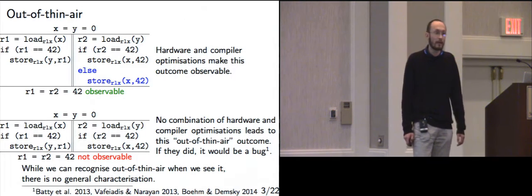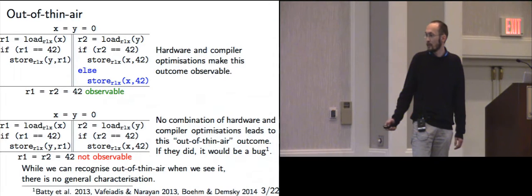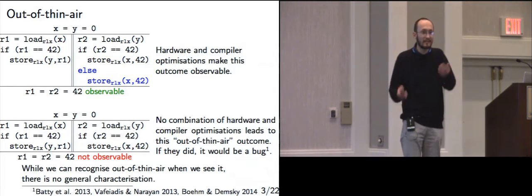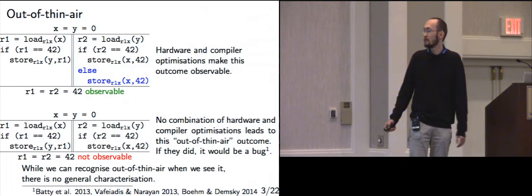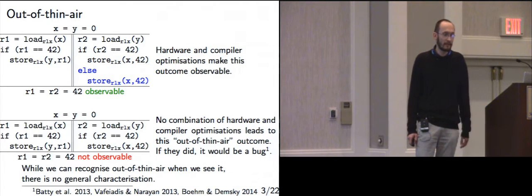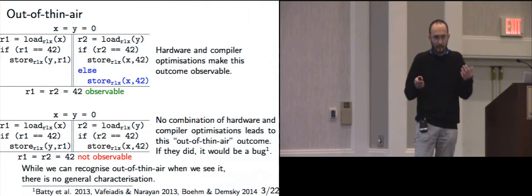No combination of hardware and compiler optimizations leads to this so-called out-of-thin-air outcome where the value just pops out of nowhere — and if they did, it would be a bug. If you look at the literature, they explore the consequences: if you have a separation logic, the only thing you can say about reading a relaxed read is it reads something unknown, which completely breaks compositionality. The issue is that while we can look at specific examples and say this is clearly an out-of-thin-air outcome, there's no general characterization. We're facing a specification problem: we have examples of bad outcomes but no general notion of what it means to be bad like that.